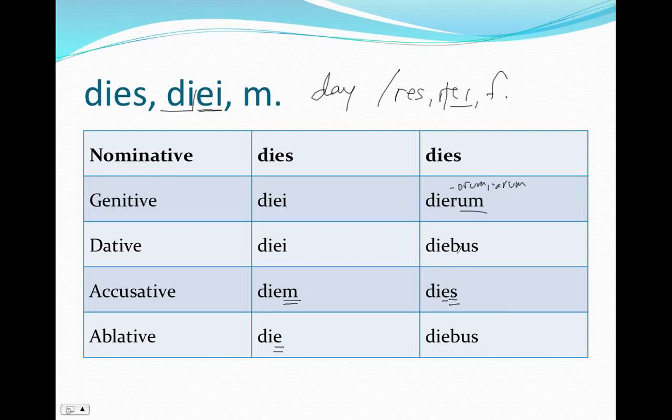And you've got a dative and an ablative that end in ebus, which you'll notice the bus just like the third declension and the fourth declension. And like all declensions, the ablative and dative plural are identical.